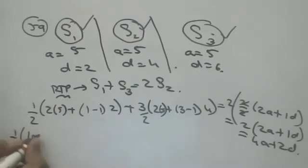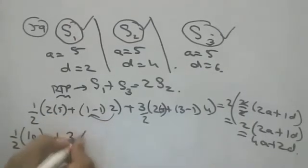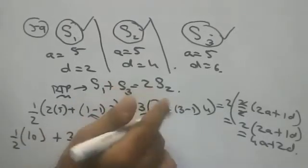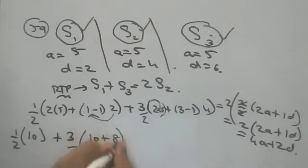So 1/2 into 2 times 5 is 10. This is 0, plus 3/2 into 2 times 5 is 10. 2A means 2 into 5, 2 times 5 is 10 plus 2 times 4 is 8.